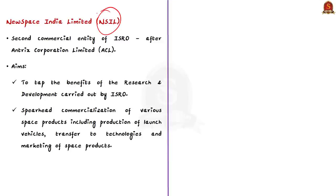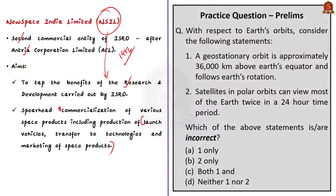New Space India Limited is the second commercial entity of ISRO. The first one is Antrix Corporation Limited, shortly Antrix, which was set up in 1992. NSIL is aimed at tapping the benefits of R&D carried out by ISRO. It will also spearhead commercialization of various space products, including production of launch vehicles, transfer of technologies, and marketing of space products. This concludes the discussion on EOS-01 and types of satellites, geostationary orbit, and polar orbit.